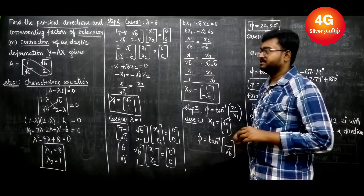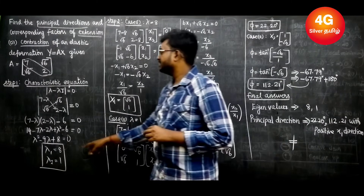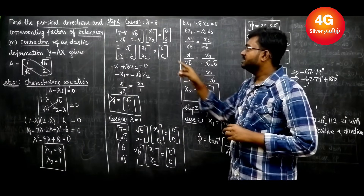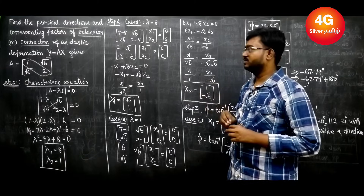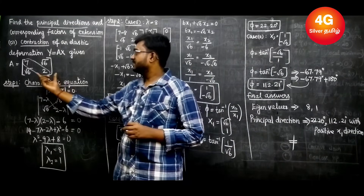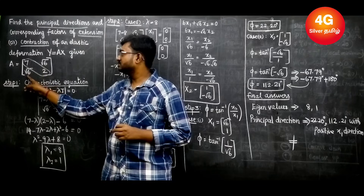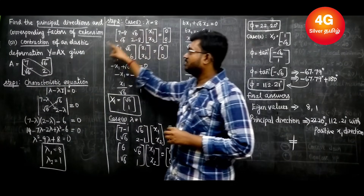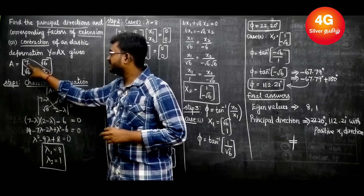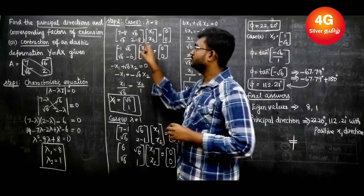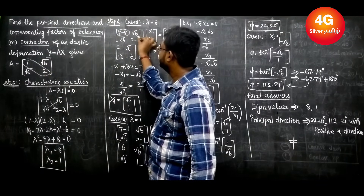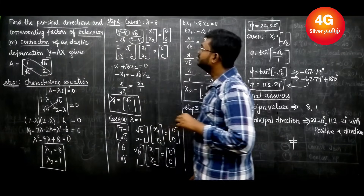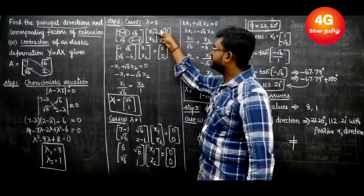Step 2, Case 1: Take the first lambda value, λ = 8. Substitute into the format (A − λI)x = 0. Our matrix A is [7, √6; √6, 2]. With λ = 8, the diagonal entries become 7−8 = −1 and 2−8 = −6. The off-diagonal entries remain √6.